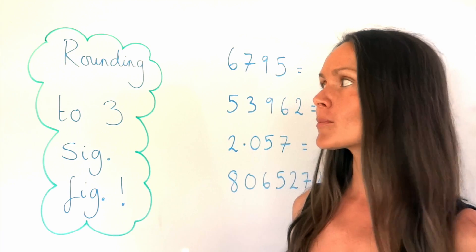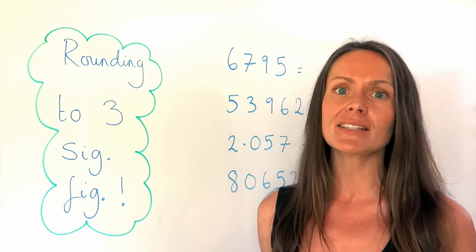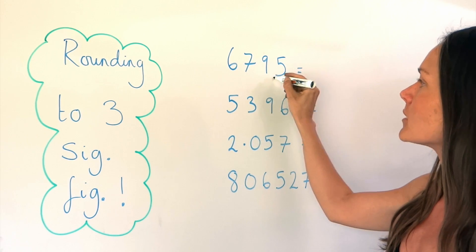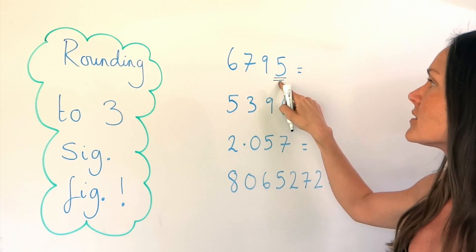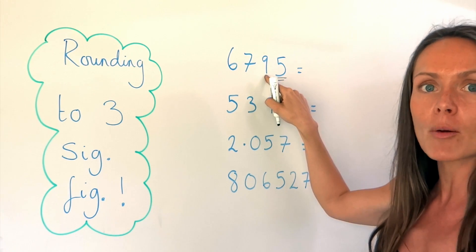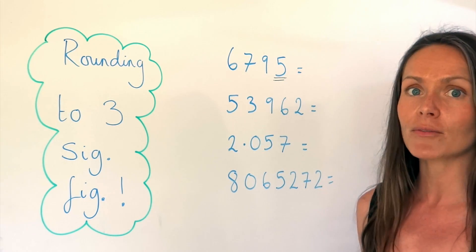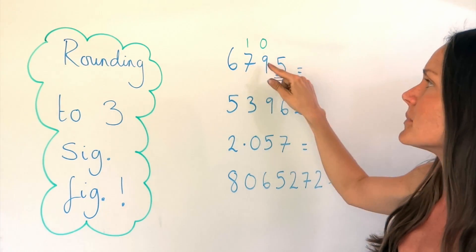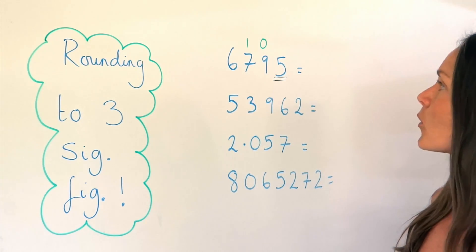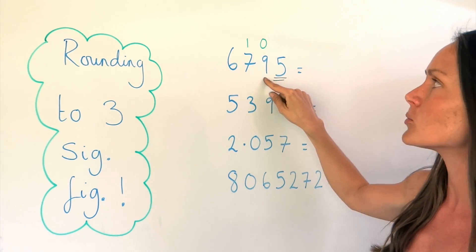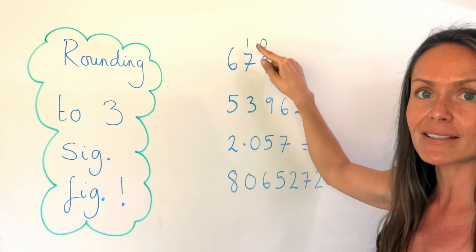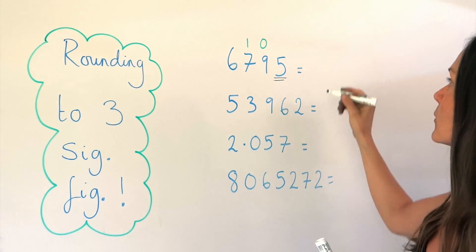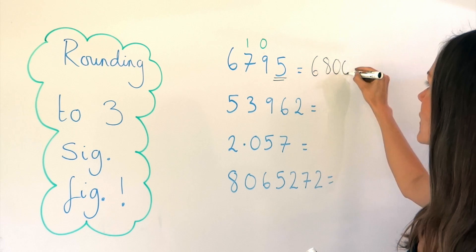In these last few examples I'm going to continue rounding to three significant figures. In the first one: one, two, three figures. I'm going to check the fourth figure. Because it's the number five, it rounds this number nine up one. The number that comes after nine is ten, but I can't just squeeze in ten here because then I'd have an extra number. So the nine changes to a zero and one is added to the digit next to it — seven plus one gives me eight. So the final answer is 6,800.